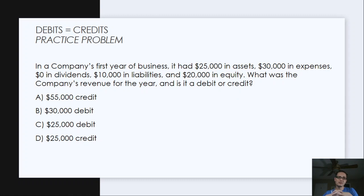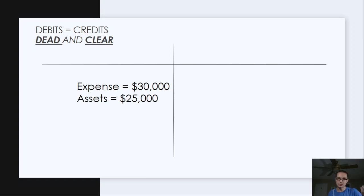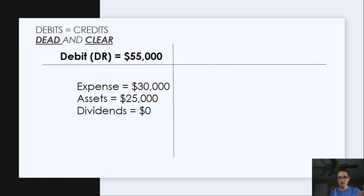This can seem a little complex, and for a lot of students who first approach accounting, these word problems can seem a little overwhelming. But let me break it down. We know that debits equal credits — that's always the case. So let's bucket off our debits. We know the expense of $30,000 was a debit, the assets of $25,000 was a debit, and we had no dividends. So our total debits are $55,000. Just knowing our DEAD mnemonic, we can solve that quickly.